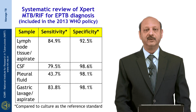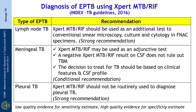For pleural TB the sensitivity of GeneXpert is low. As mentioned in our Indian Index TB Guidelines 2016, for lymph node tuberculosis, GeneXpert MTB/RIF should be used as an additional test to conventional smear microscopy, culture and cytology in FNAC specimens — this is a strong recommendation. For tubercular meningitis, GeneXpert MTB/RIF may be used as an adjunctive test; however, a negative result on CSF does not rule out TB meningitis and treatment decisions should be based on clinical features and CSF profile — a conditional recommendation. For pleural tuberculosis, GeneXpert MTB/RIF should not be used routinely — strong recommendation.